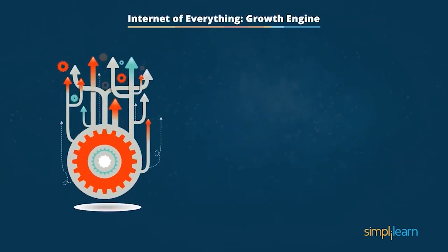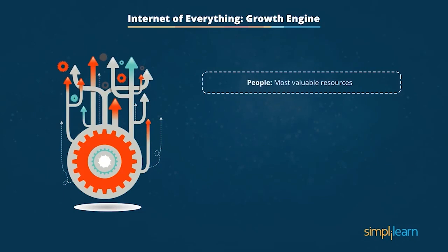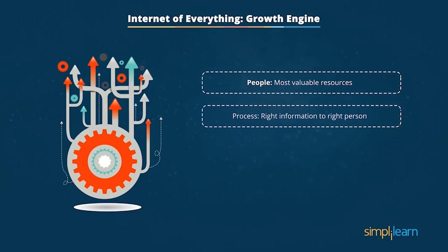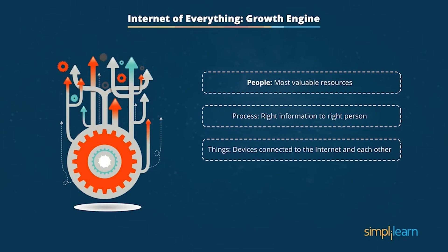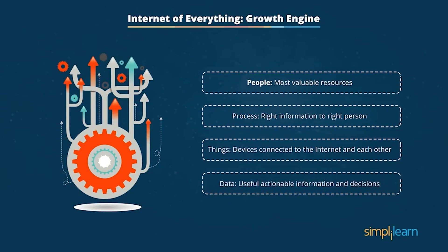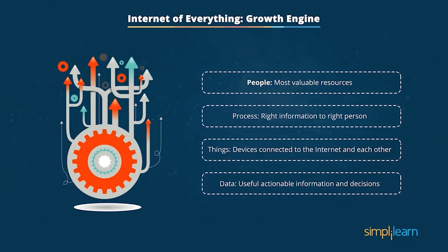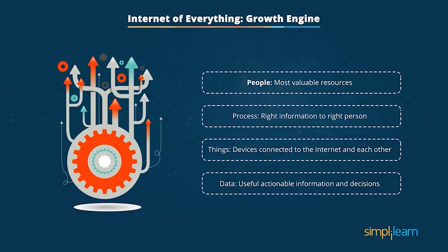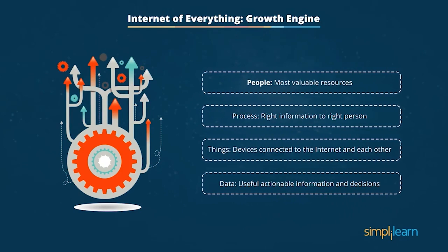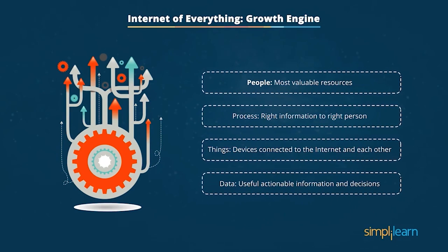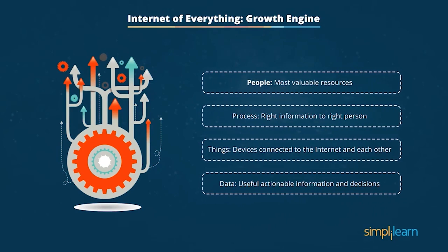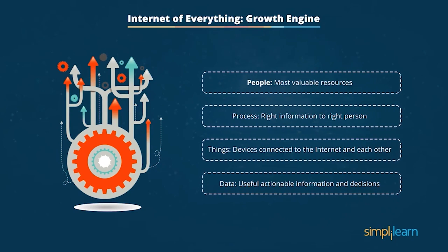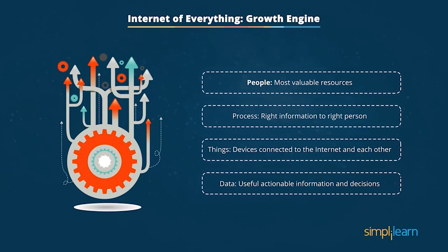The Internet of Everything comes with a growth engine for any organization. It includes people — the most valuable resources — process, things that include physical devices and data from sensors to make actionable insights, and data. People, process, things, and data are the growth engine elements that give a company an edge in the digital transformation world. With data privacy and transparency mechanisms, it is important for every organization to follow internet ethics and compliance.